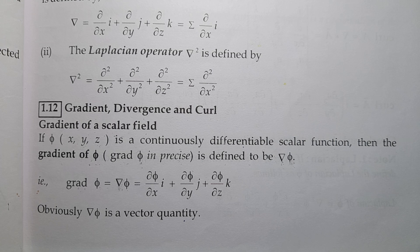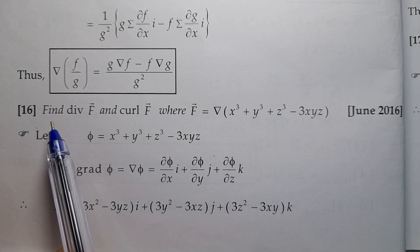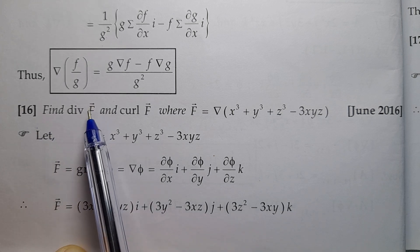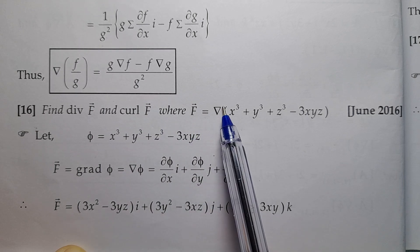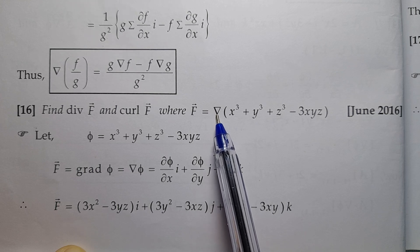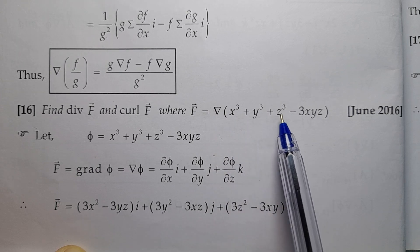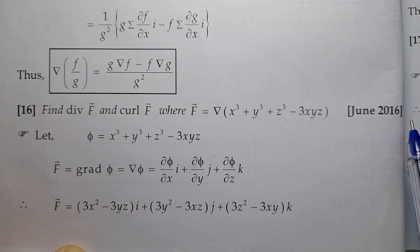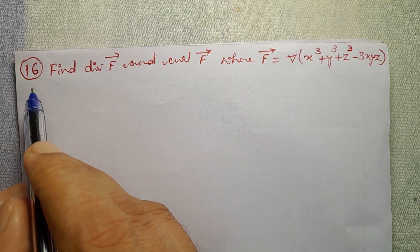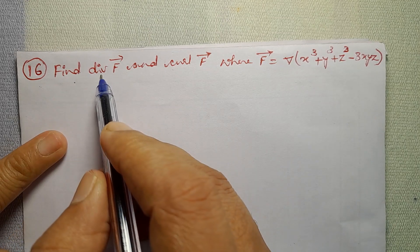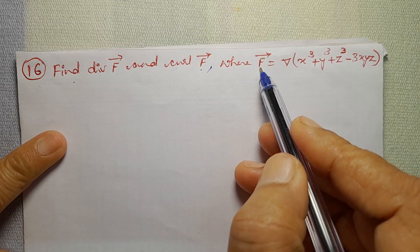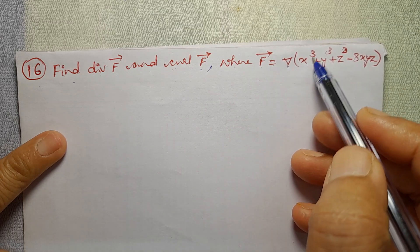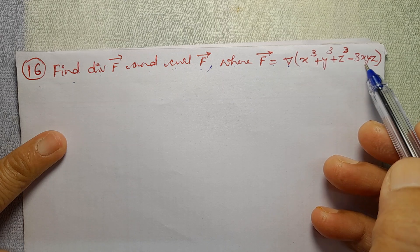Article No. 1.12: Gradient, Divergence and Curl. Problem No. 16: Find Divergence of vector F and Curl of vector F, where vector F equals del (nabla) of (x³ + y³ + z³ − 3xyz). June 2016.